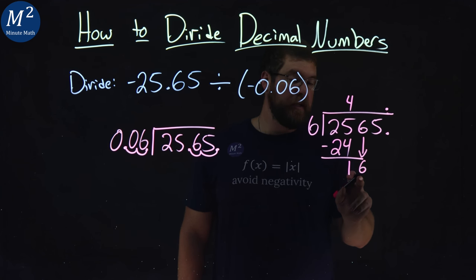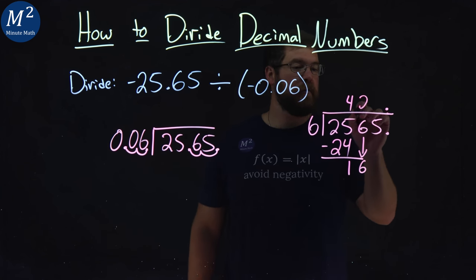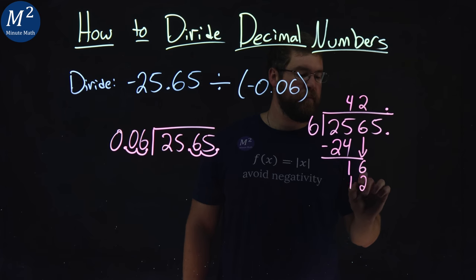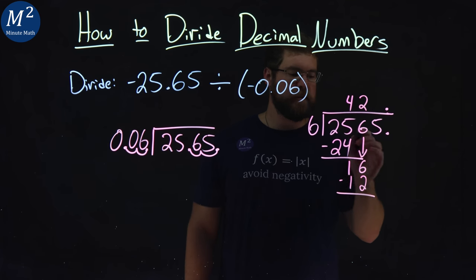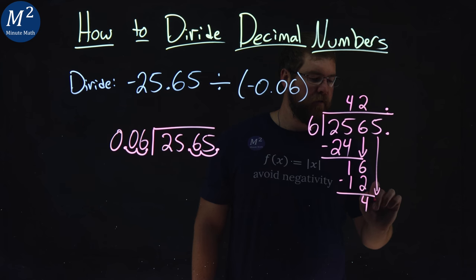Can 6 go into 16? That's going to be 2 times. 2 times 6 is 12. Subtract. 16 minus 12 is 4. Bring down the 5.